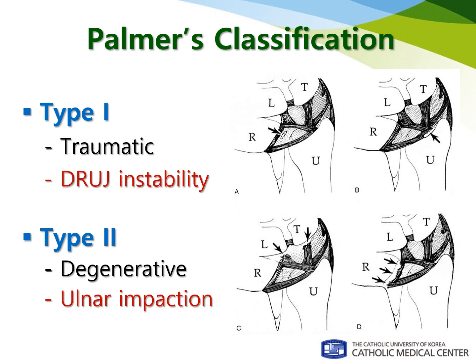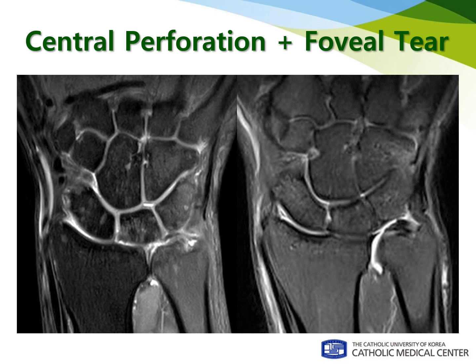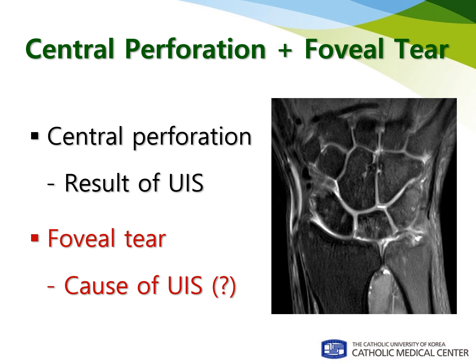Palmer classified the TFCC tear as traumatic and degenerative, but in reality it's very difficult to differentiate between those two in arthroscopic findings. Sometimes we find complex tear patterns with central perforation and foveal tear simultaneously, and it's been very difficult to explain what happened to the TFCC. I postulate that the foveal tear is the cause of ulnar impaction syndrome, and the central perforation is the result of ulnar impaction syndrome.